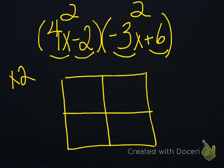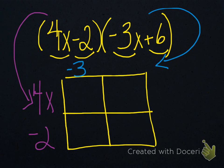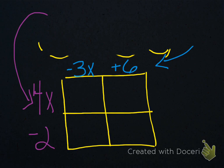Then you put in your corresponding terms for each binomial pair. Take this binomial — 4x minus 2 — and put it on the side, and then take the other one — negative 3x plus 6 — and put it up top. It's very similar to the multiplication chart from grade school where you had 1 through 10 on the top and 1 through 10 on the side, giving you all your fact families. We're going to do it pretty much the same way.